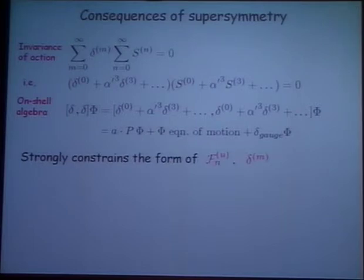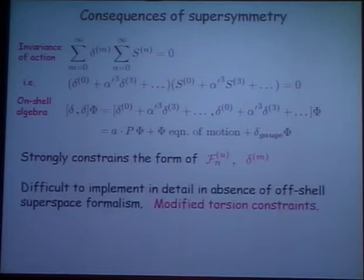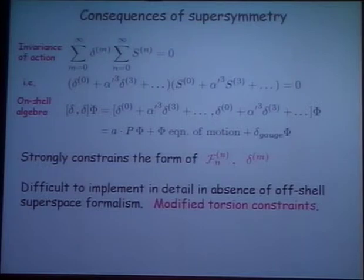These conditions strongly constrain the form of F. Unfortunately, they're extremely difficult to implement, since we don't have a superspace formalism in which to do it. And the presence of these deltas in particular indicates that there are complicated modifications to, for example, the torsion constraints that one might have imposed.